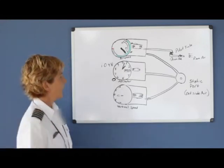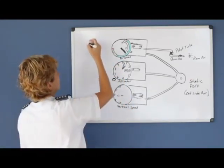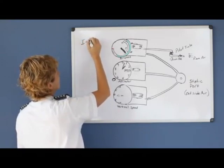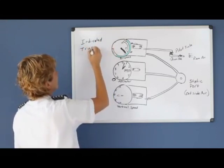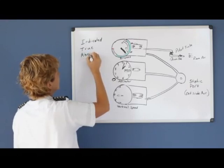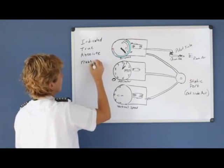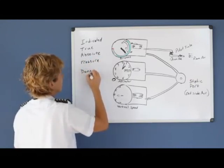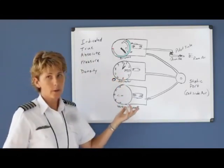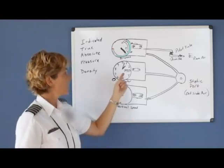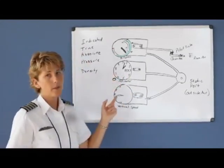The next thing is we need to look at the different types of altitudes. Our different types of altitudes are indicated, true altitude, absolute altitude, pressure altitude, and density altitude. Indicated altitude is just what's read on the dial, whether it's right or wrong. The reason I say whether it's right or wrong is because perhaps you don't have the current setting in there or your altimeter is malfunctioning. But indicated is simply read off the dial.